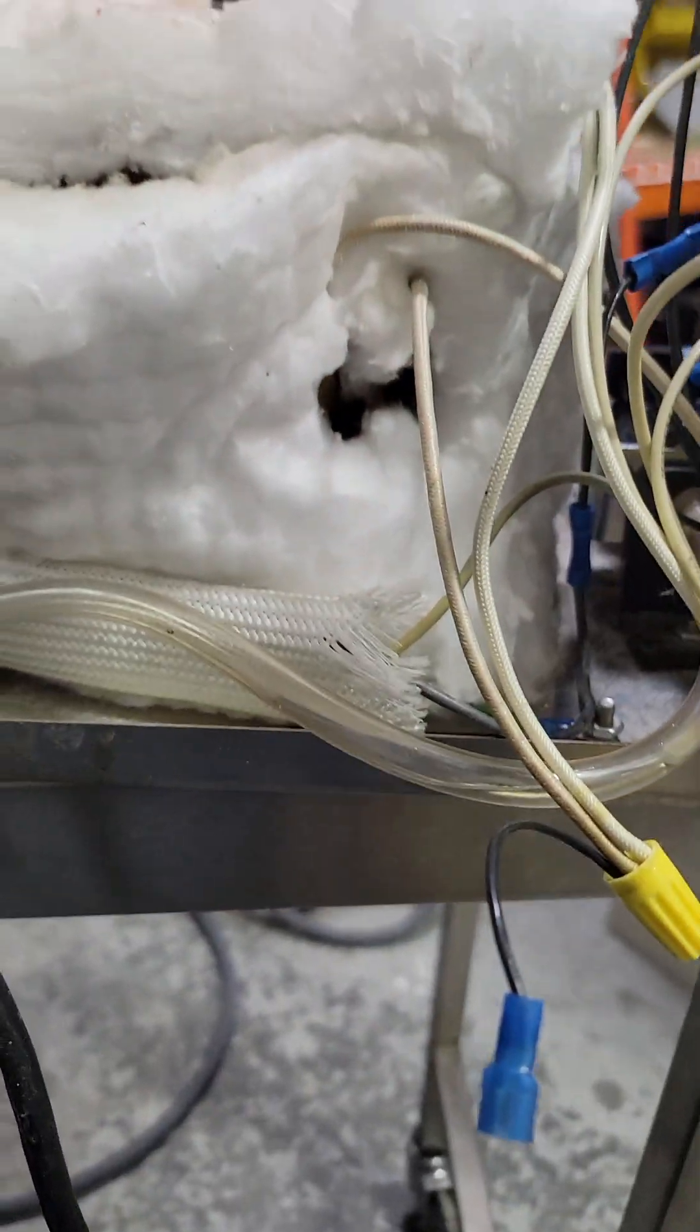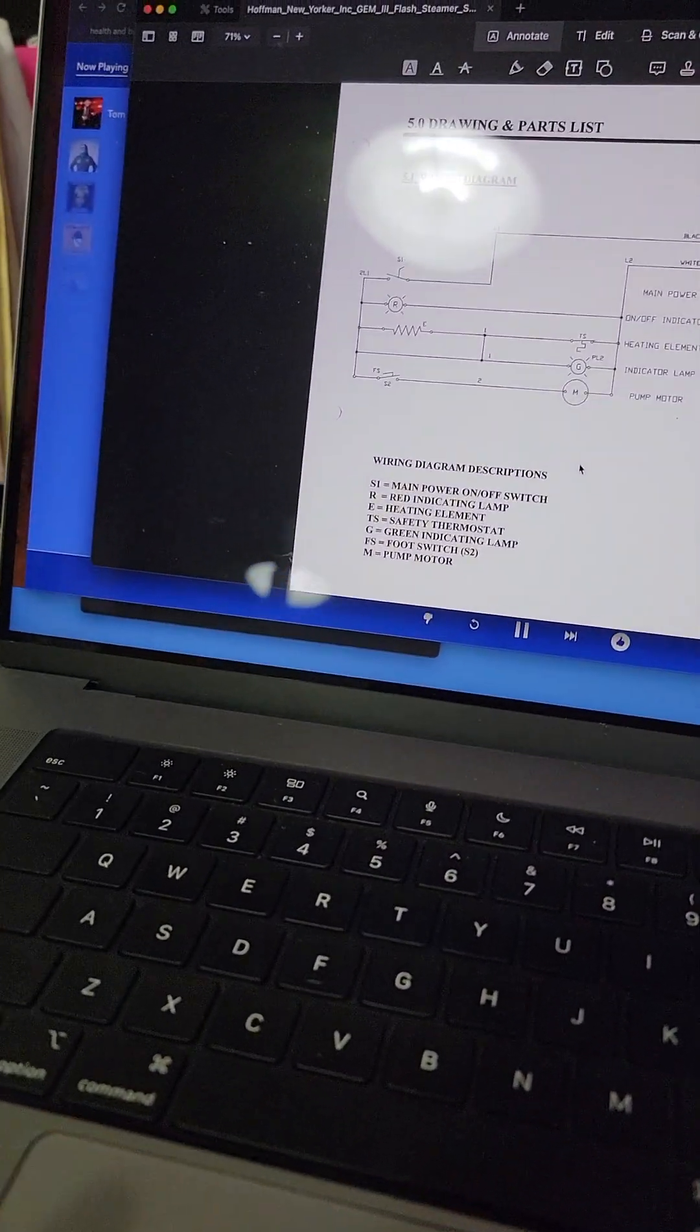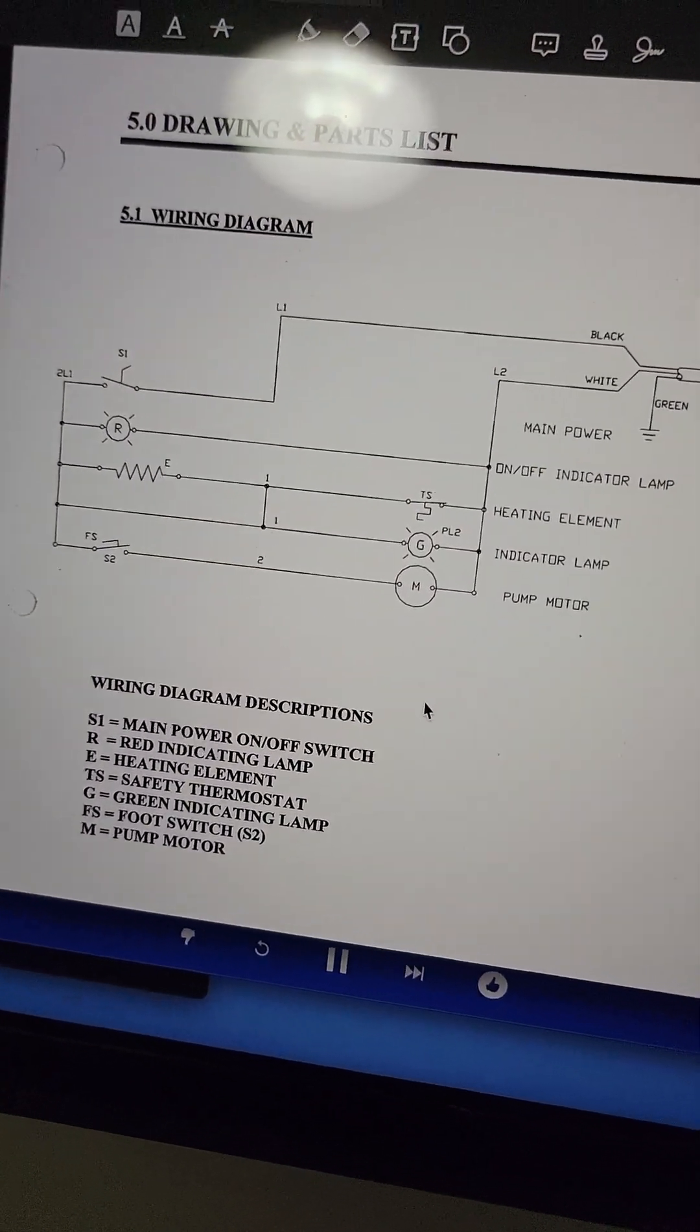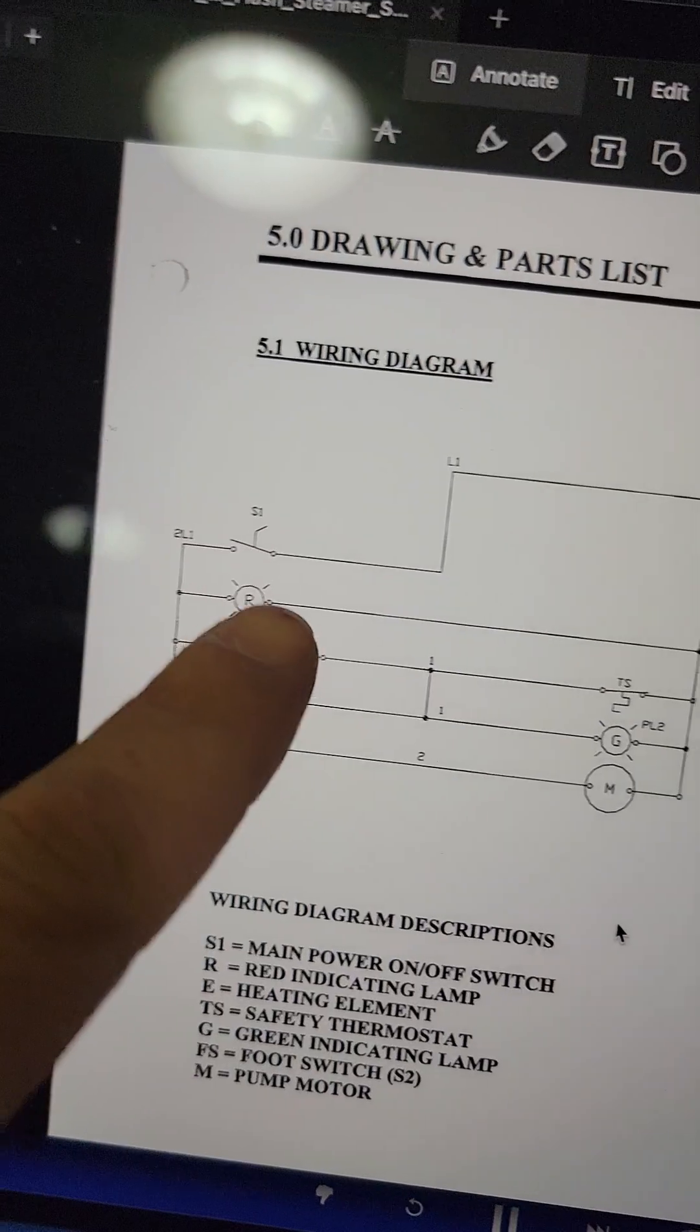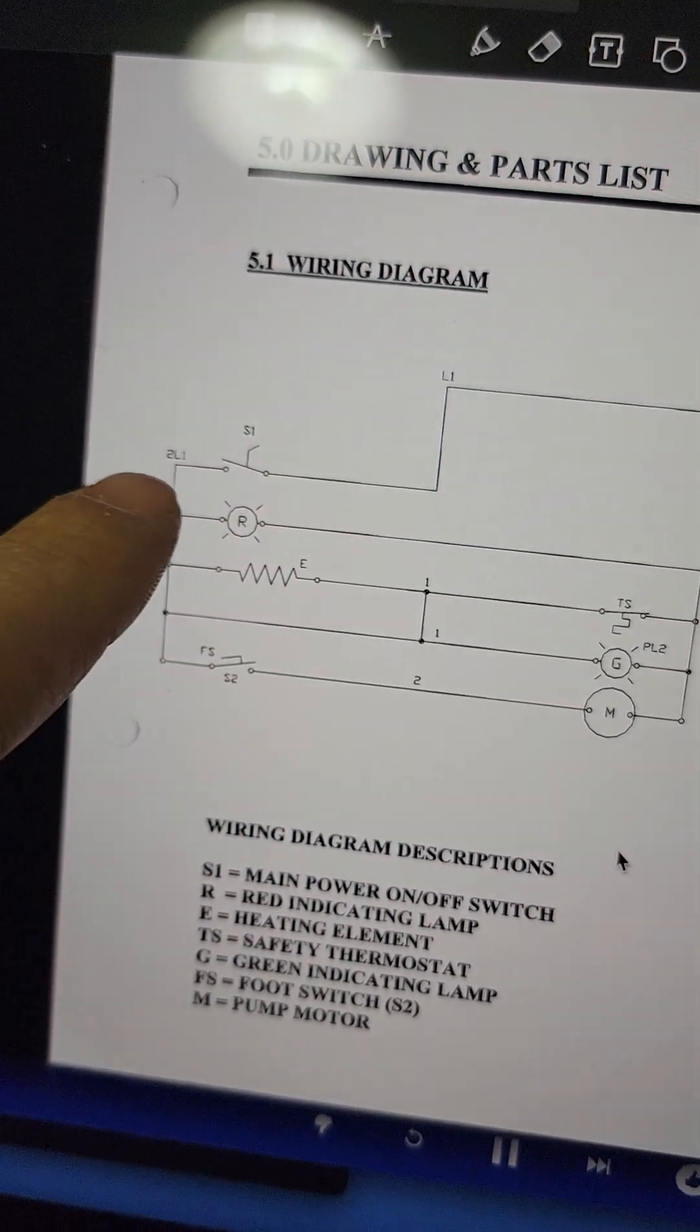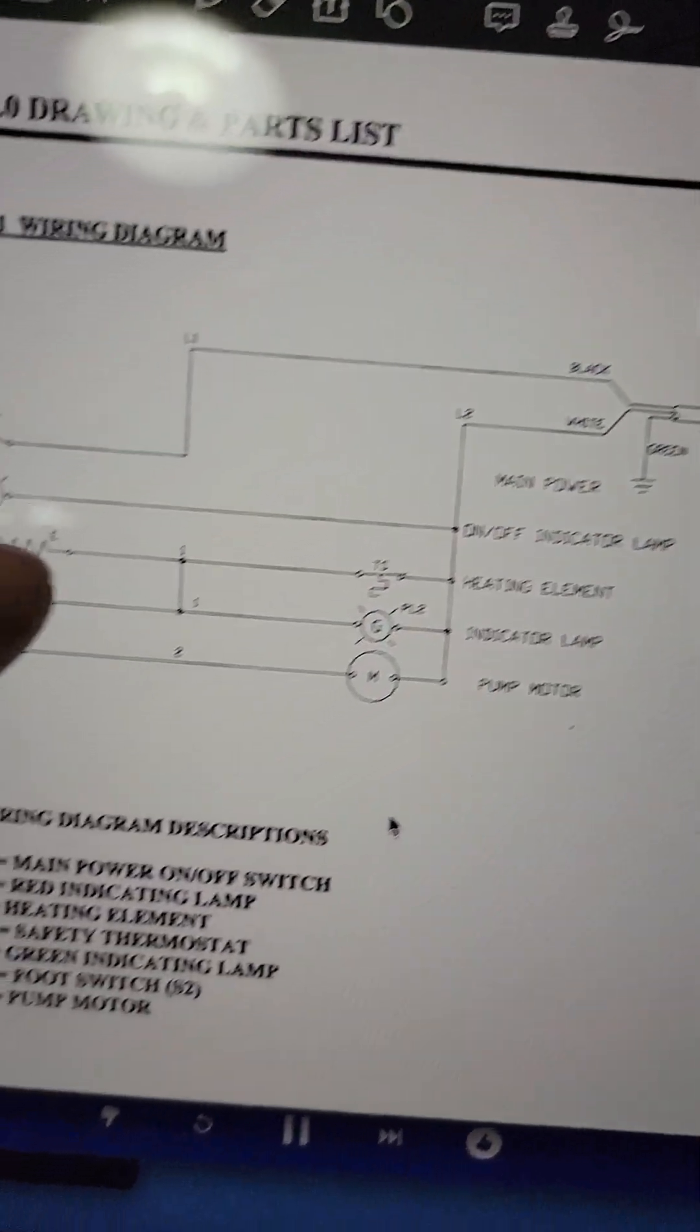For anyone who hasn't seen a schematic or is learning how to read schematics: obviously your plug shows your wiring colors, green for your ground, ground symbol, switch symbol S1 (switch 1), line 1, line 2.